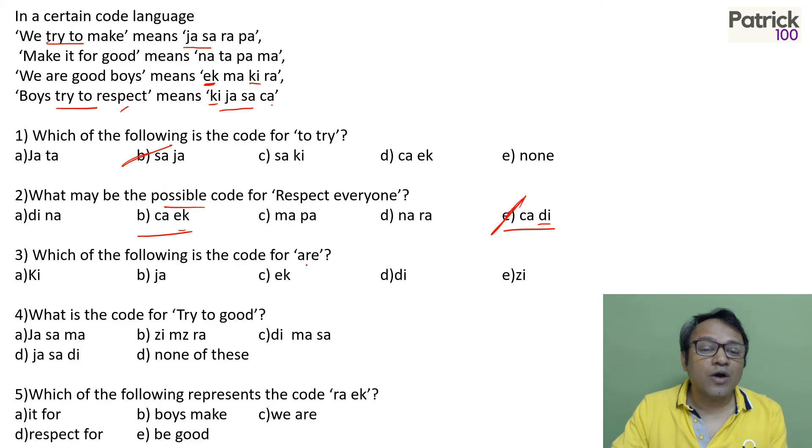Which of the following is code for are? So check R. R is there in the third only. If R is there in the third, check what is only in the third. KI is there in the fourth.